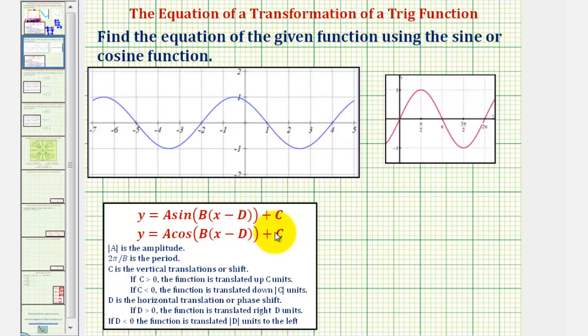We'll build the function in one of these two forms where the absolute value of A is equal to the amplitude, two pi divided by B is the period, C affects the vertical shift, and D affects the horizontal shift.